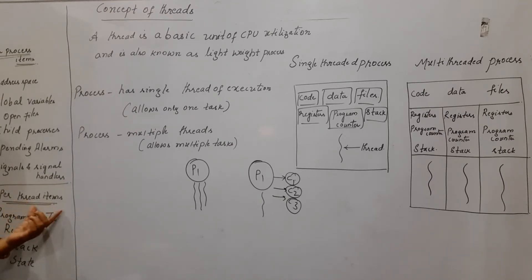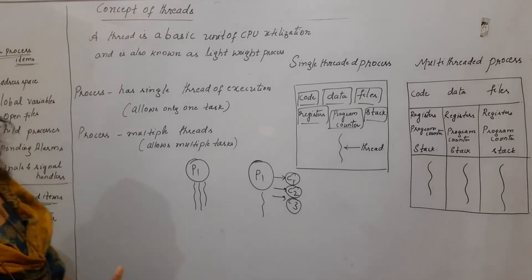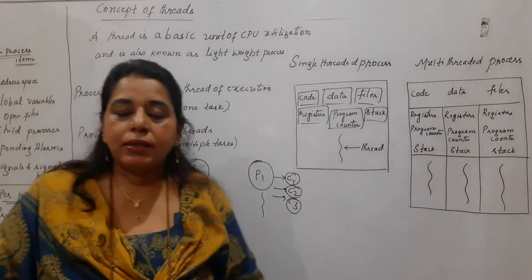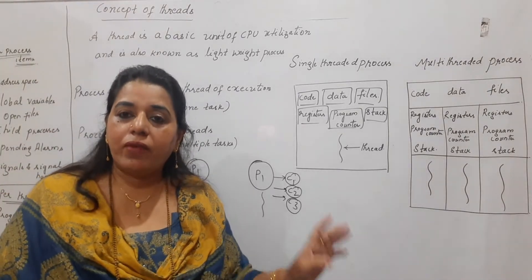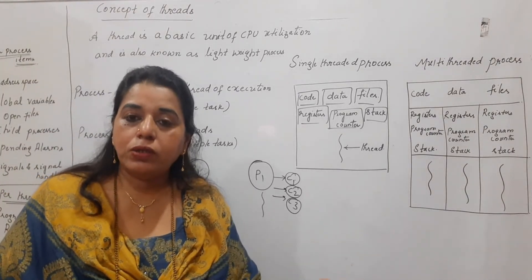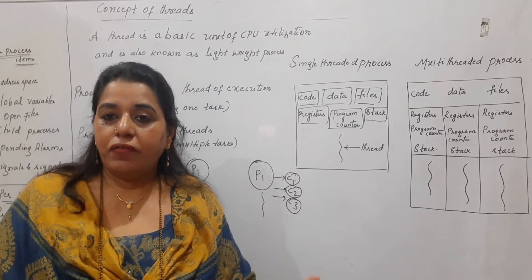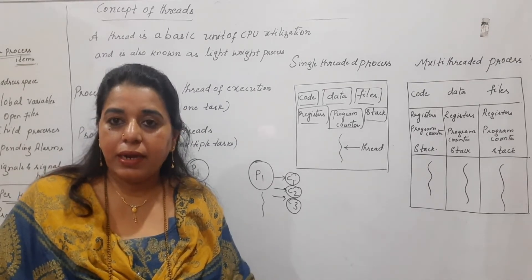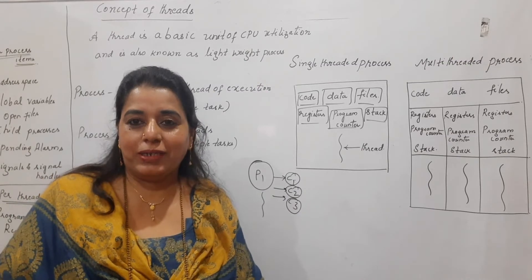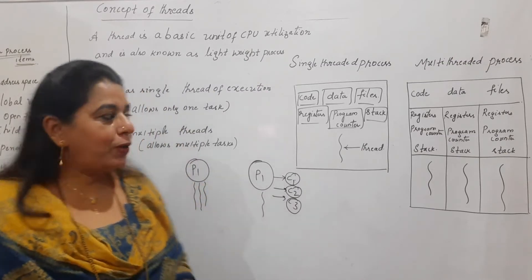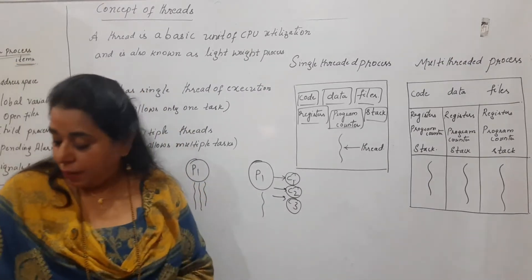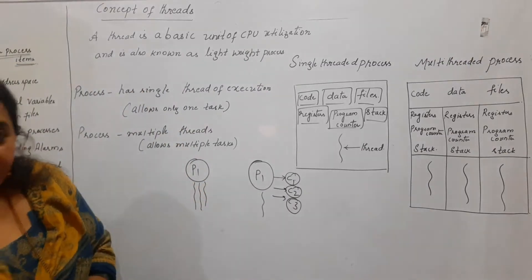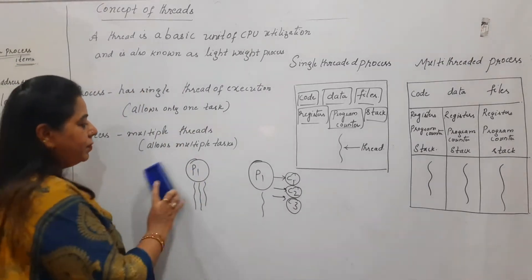Whereas per thread, it is program counter, registers, stack, and state. So as a process has got different states, similarly a thread will also undergo different states — it can be the ready state, the running state, and the blocked state. So this is the main difference of the concept of the thread.